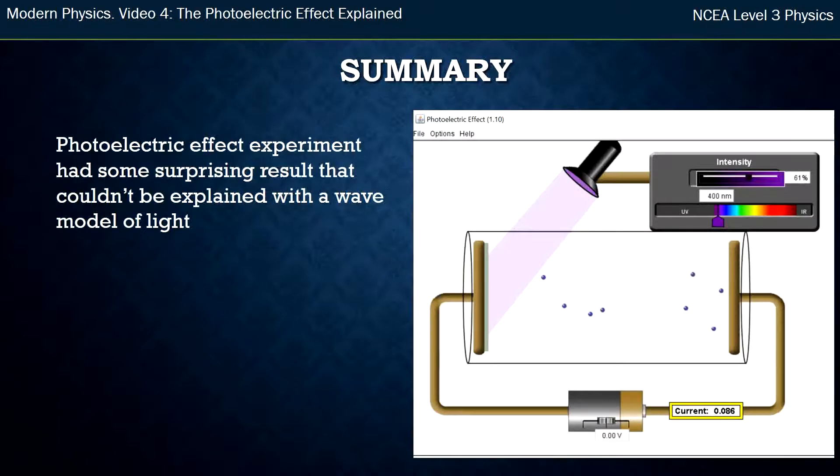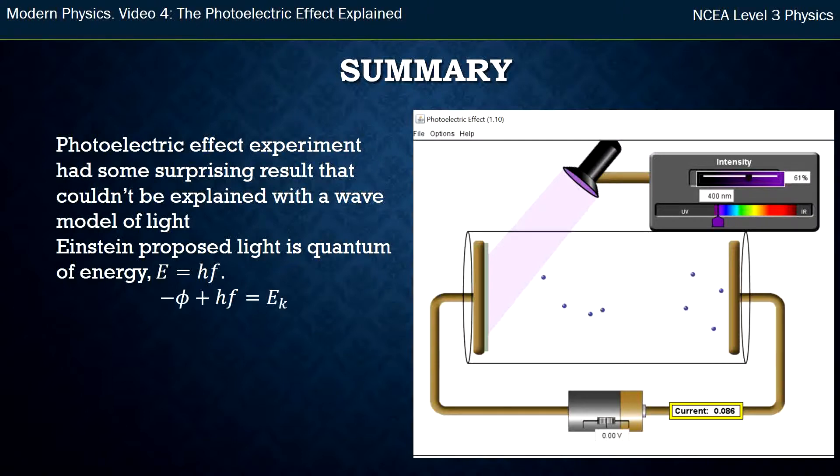So in summary, this photoelectric effect was a very important stepping stone for humans in understanding what light was. When scientists first came up with it, the results were surprising, because the wave model of light, which was currently the model of light, couldn't explain a couple of the results. So Einstein proposed that light is a quantum of energy, or a packet of energy, and the energy of that packet is given by a number, h, times the frequency of that light. We get an energy equation where the electrons in the metal are effectively in an energy well. They have to get energy from the light, and that gets them to escape with some kinetic energy.